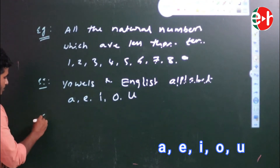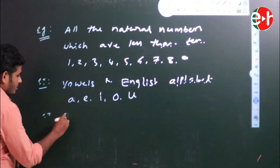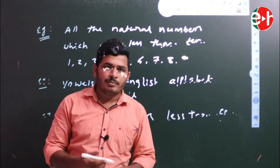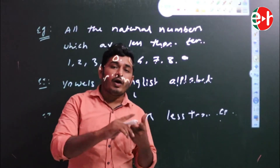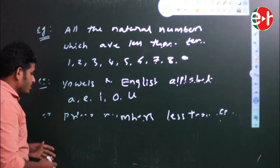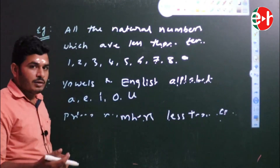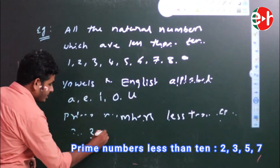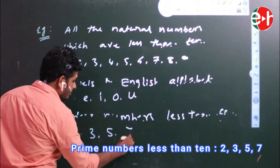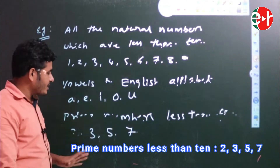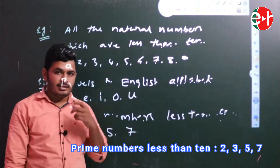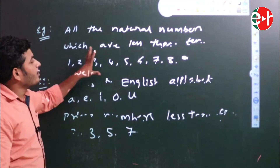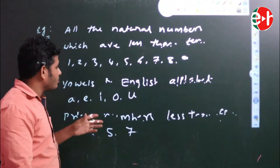One more example: prime numbers less than 10. Prime numbers are the numbers which have only two factors — 1 and the number itself. So the prime numbers less than 10 are 2, 3, 5, 7. These are all well-defined objects, and the collection of well-defined objects is called a set.